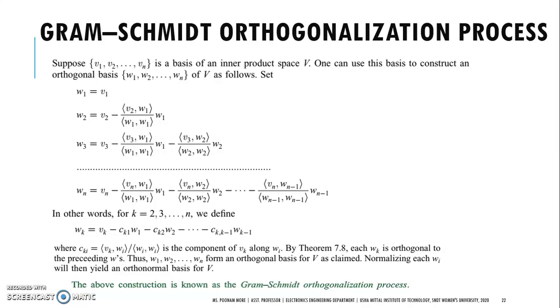Suppose V₁, V₂, up to Vₙ forms the basis of an inner product space V. Then by using this basis we can construct an orthogonal basis W₁, W₂, up to Wₙ for the inner product space V.